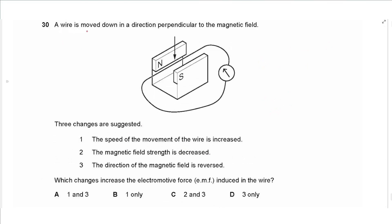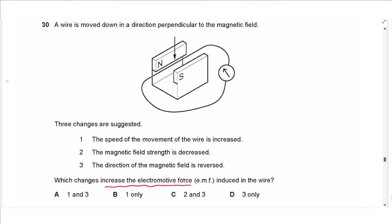Question 30: a wire moves perpendicular to a magnetic field. Three changes are suggested: increasing the speed of movement, decreasing the magnetic field strength, and reversing the magnetic field direction. The induced EMF increases with greater speed and greater field strength. Decreasing field strength reduces EMF, and reversing direction changes the direction of EMF but not its magnitude. Only increasing the speed (change 1) increases the EMF. The answer is B.